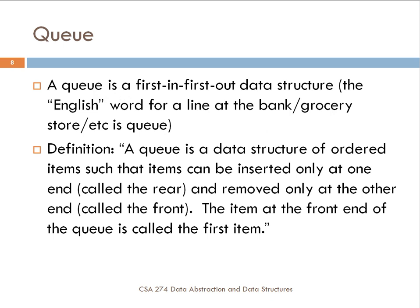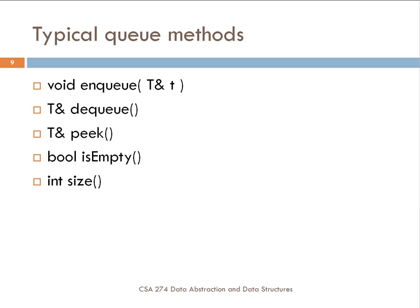The next data structure is the queue. The queue data structure is a first-in, first-out data structure, also called FIFO. A queue is the English word for a line at a bank or grocery store. A queue is a data structure of ordered items such that items can be inserted only at one end, called the rear, and removed only at the other end, called the front. Typical queue methods include enqueue to add, dequeue to remove, peek to see the front element, is_empty, and size.